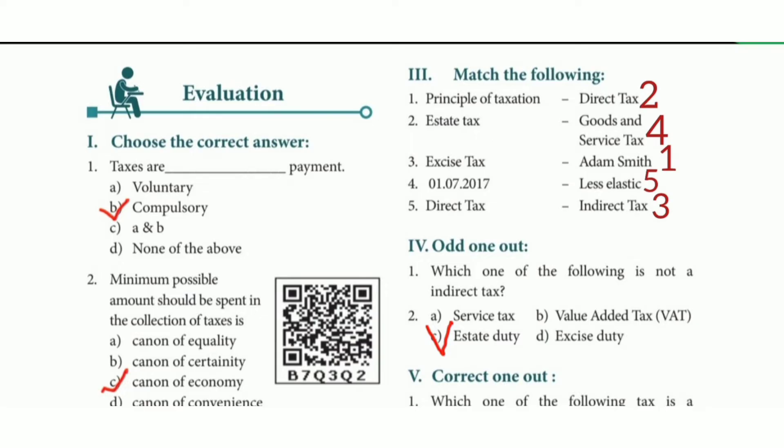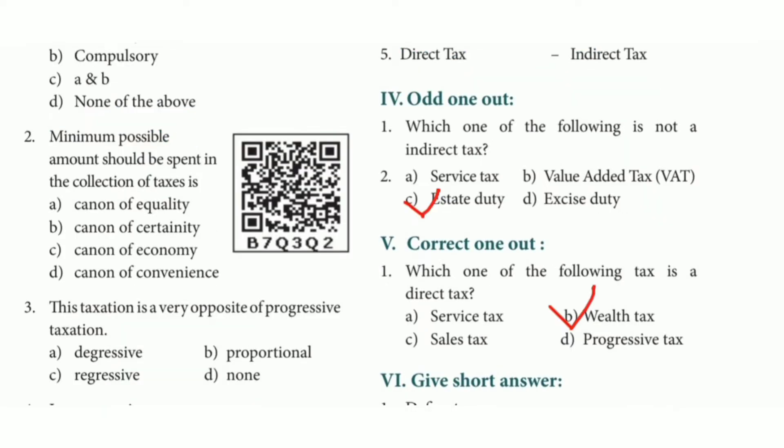Odd one out: which one of the following is not an indirect tax — the answer is excise duty. Direct one out: which one of the following is a direct tax — the answer is option B, wealth tax.